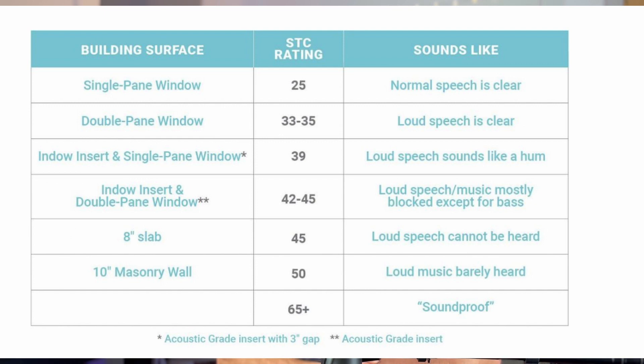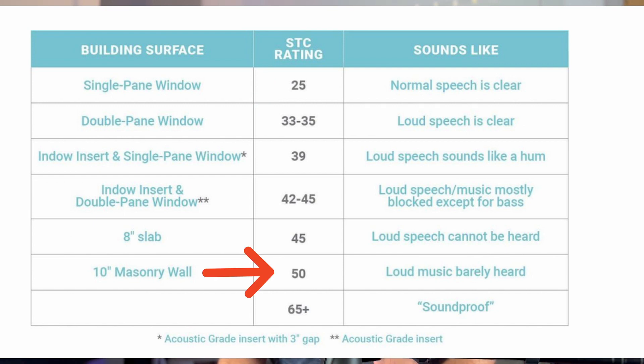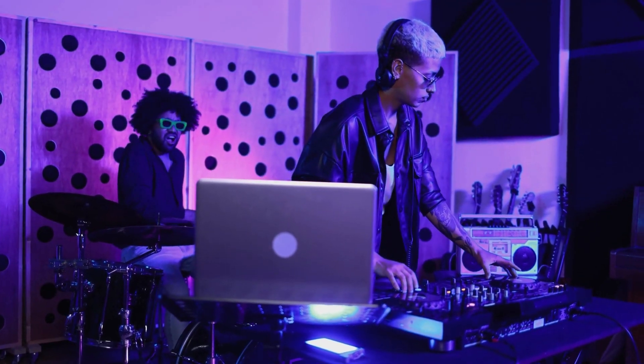Looking at the Indow chart, they say that at an STC of 25 normal speech is clearly heard, and at an STC of 50 loud music is barely heard. You can see by these charts that there's really no clear definitive way to say that one STC rating will achieve certain desired results in your recording studio. If you have a loud band playing and you think a wall STC rating of 50 will definitely work, that's not necessarily true — all we know is it will help reduce speech heard through the wall. If you have a singer in there you have a rough idea, but as soon as you add a drummer and a bass player, all bets are off.